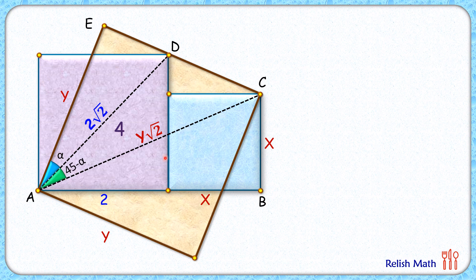Again, with respect to this purple square, when you look at this yellow angle, it will be 45°, and thus the remaining angle will be α degrees.